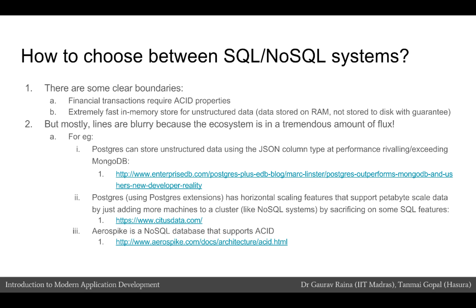There are also extensions to the Postgres system that allow for horizontal scaling to petabyte-scale data just by adding more machines to a cluster, very similar to NoSQL systems — and they do this by sacrificing on some SQL features. Similarly, Aerospike is a NoSQL database that actually supports ACID properties. A lot of things are continuously changing month on month, year on year in this environment, and so it is very hard to choose a database that is one-size-fits-all and will work in all scenarios.